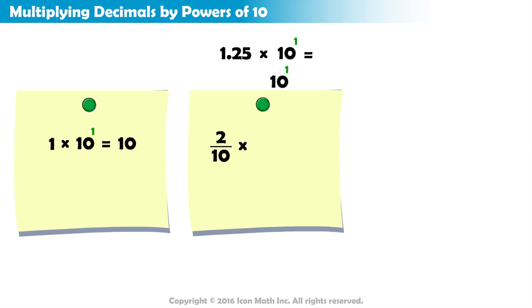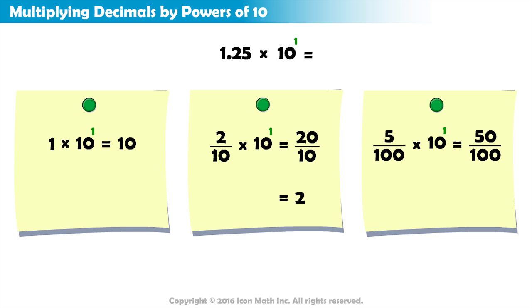2 tenths times 10 gives us 20 tenths and that equals 2 wholes, so we get a 2. The next decimal is 5 hundredths. Multiplying it by 10 gives us 50 hundredths or 5 tenths. So, adding all the numbers together gives us 12 and 5 tenths.